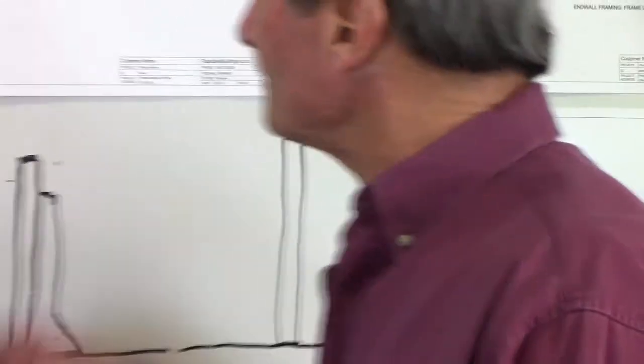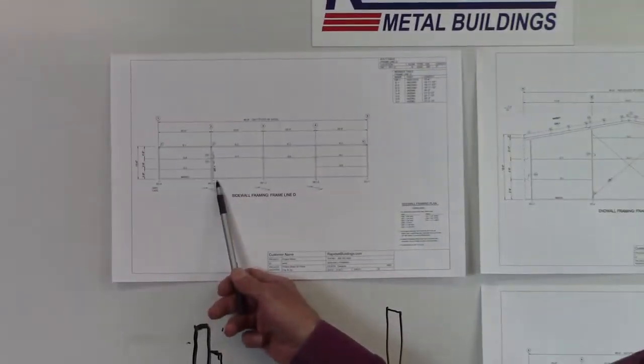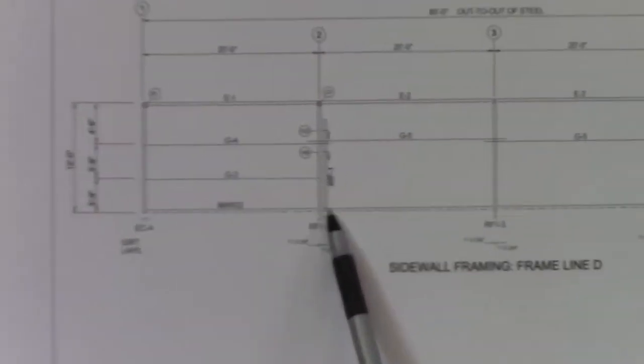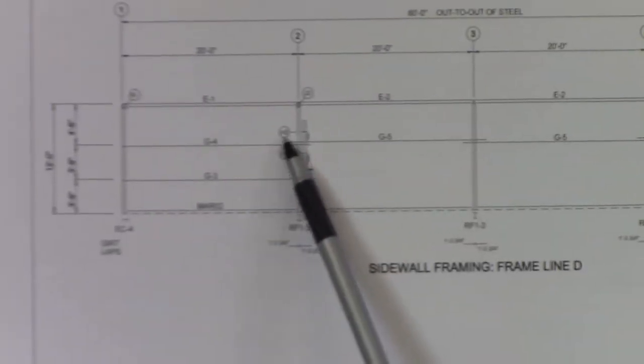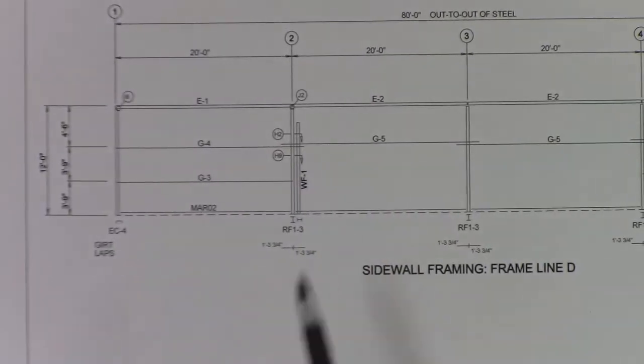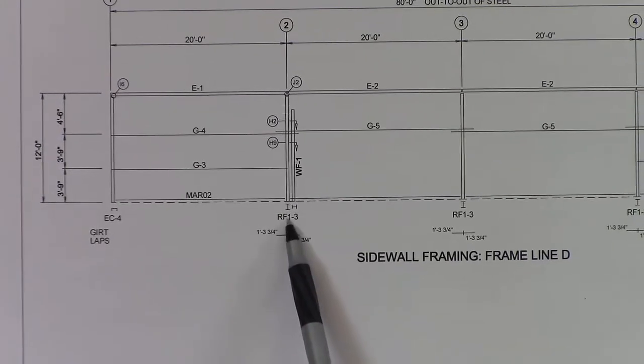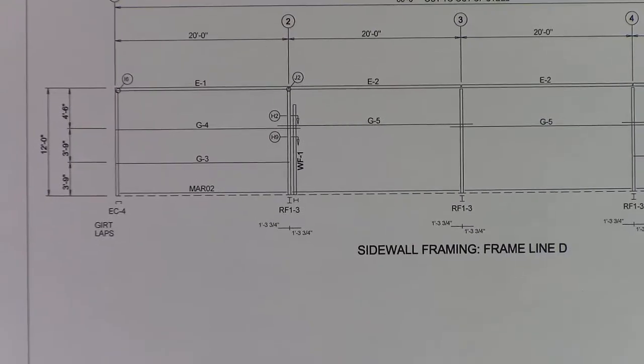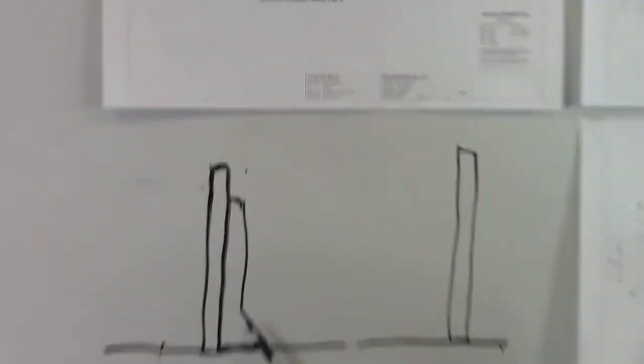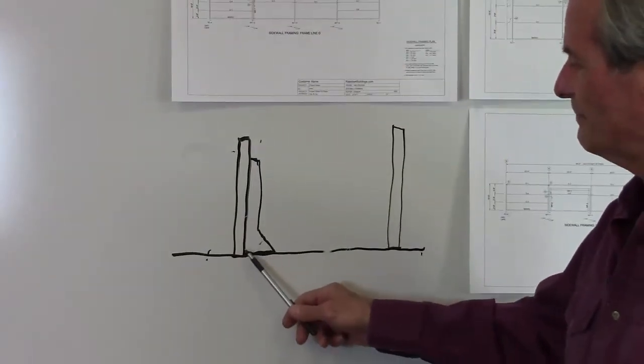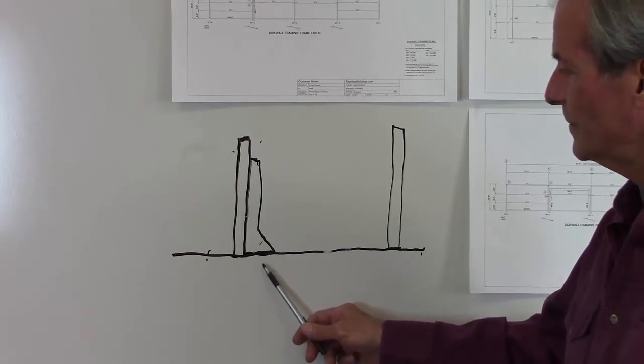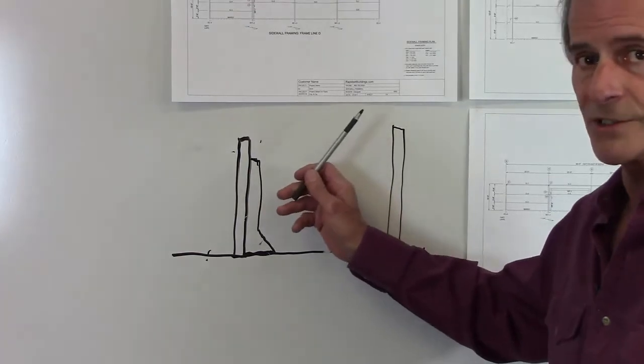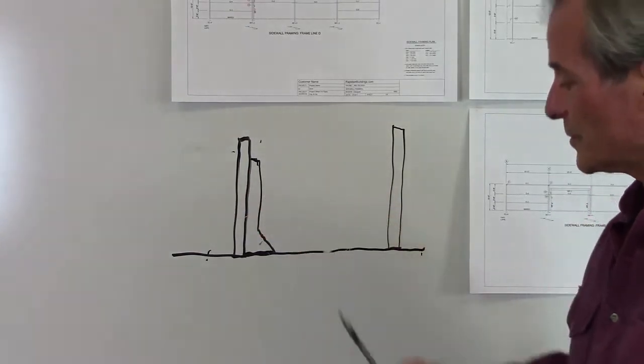The other option is what we call a wind column. Now a wind column is once again an I-beam column that is bolted into the side of the building column. The problem with this is it also bolts into the concrete. Now here's kind of a rough sketch of what I'm talking about. It'll be flared on the bottom. It comes out and it'll bolt into the foundation. Now that is to stop the sway. That's what wind bracing is all about, to stop the sway.